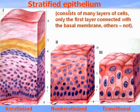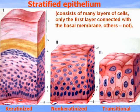Stratified epithelium consists of many layers of cells, and only the first layer is connected to the basal membrane — the others are not. Stratified epithelium may be keratinized, non-keratinized, or transitional. Keratinized epithelium contains a surface layer of cells that contain keratin. In non-keratinized epithelium, the surface layer of cells contains no keratin. This epithelium is called stratified squamous keratinized, and this one is stratified squamous non-keratinized, because the superficial layer consists of squamous flat cells.